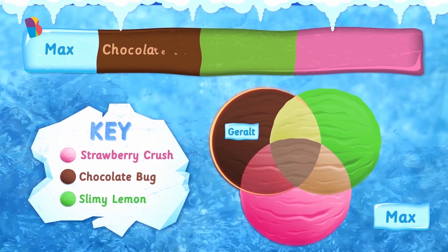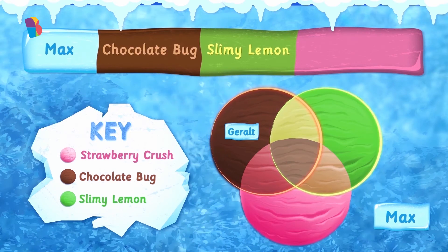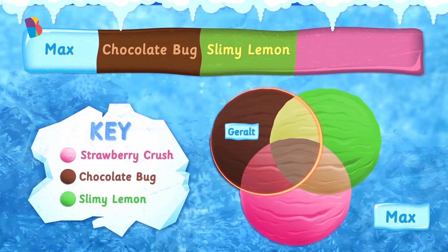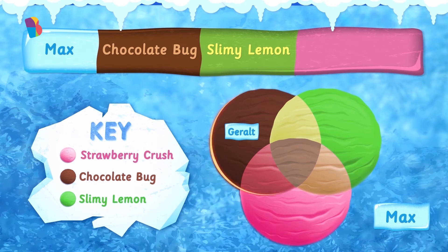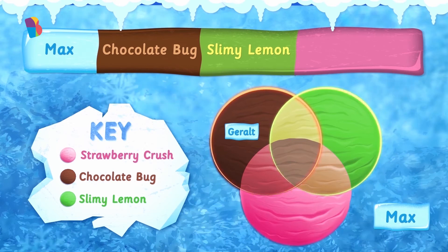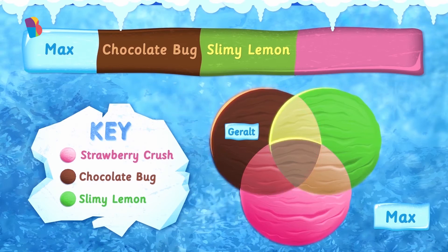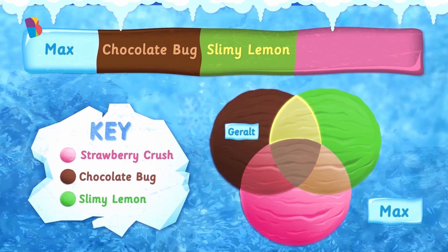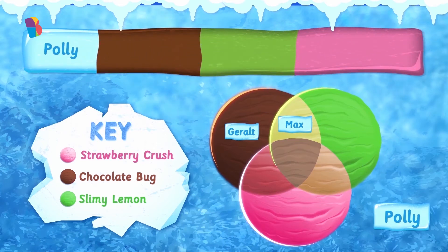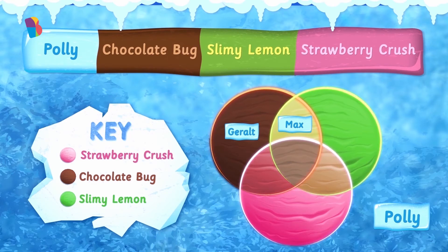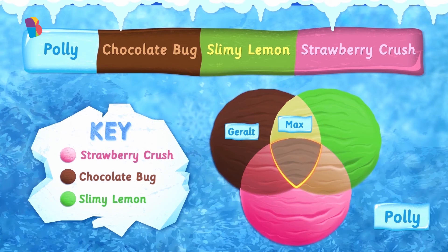My friend Max likes chocolate bug and slimy lemon, but not strawberry crush. Where should I place him? Max wants chocolate bug and slimy lemon, but no strawberry crush. The overlapping portion of the brown and lime green circles means he gets both chocolate bug and slimy lemon, but not strawberry crush. My friend Polly wants all three flavors. If she wants all three flavors, then Polly should be placed in the overlapping portion of the brown, lime green, and pink circles — that's right in the middle.